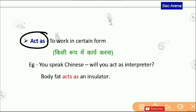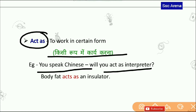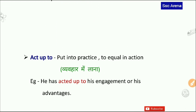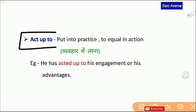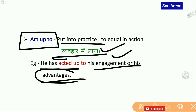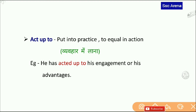Act As भी एक तरीके से Act For ही होता है — किसी के रूप में कार्य करना। You speak Chinese, will you act as interpreter? Act As Instructor — यानि आप interpreter का काम करो जो एक language को दूसरी language में translate करता है। Next है — Act Up To. इसका मतलब होता है put into practice — व्यवहार में लाना। He has acted up to his engagement to his advantage। हालांकि यह exam में अभी तक देखने को नहीं मिला है।